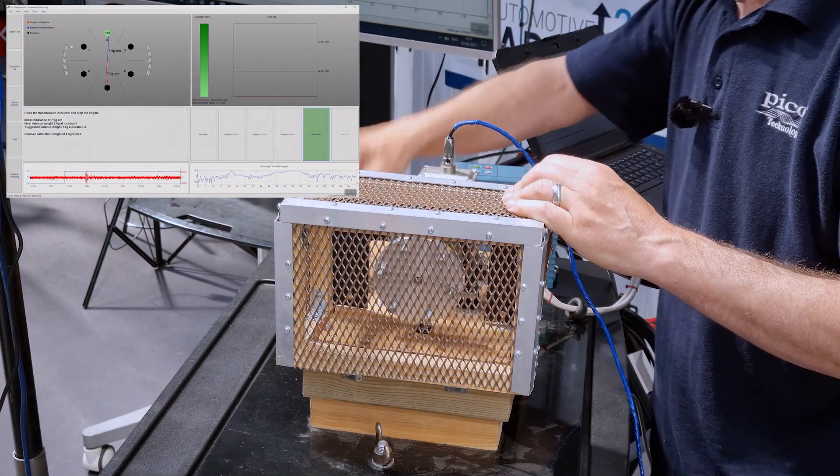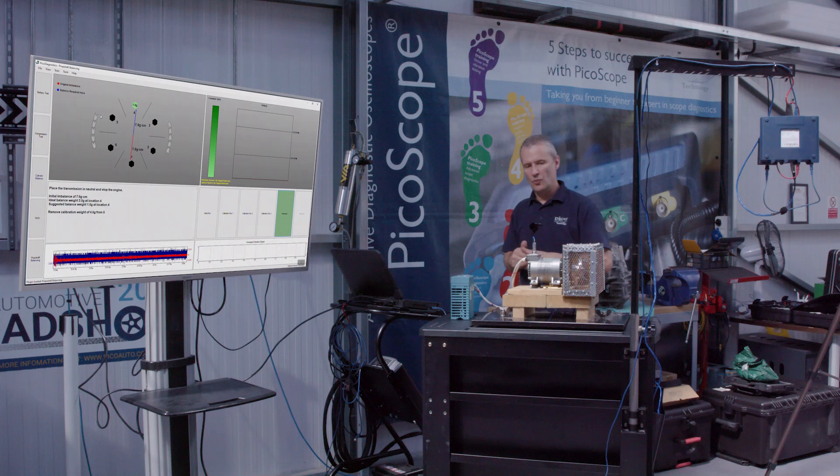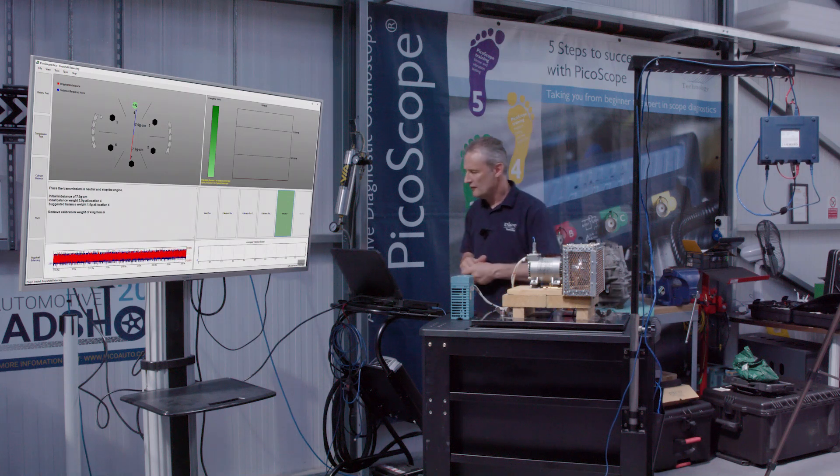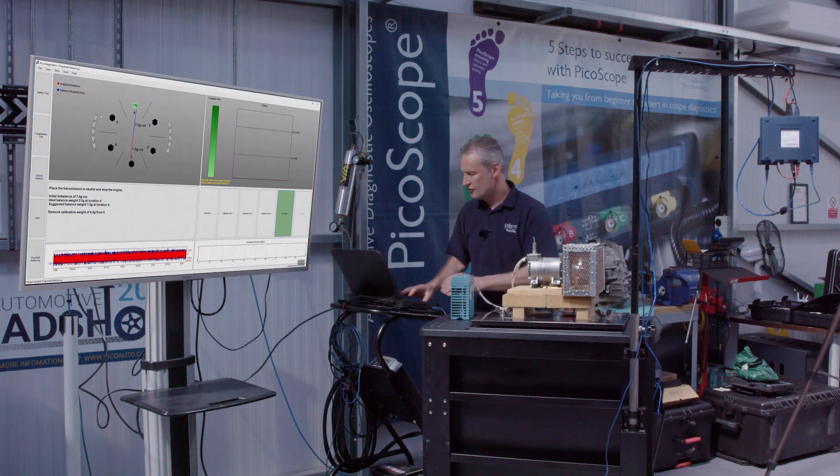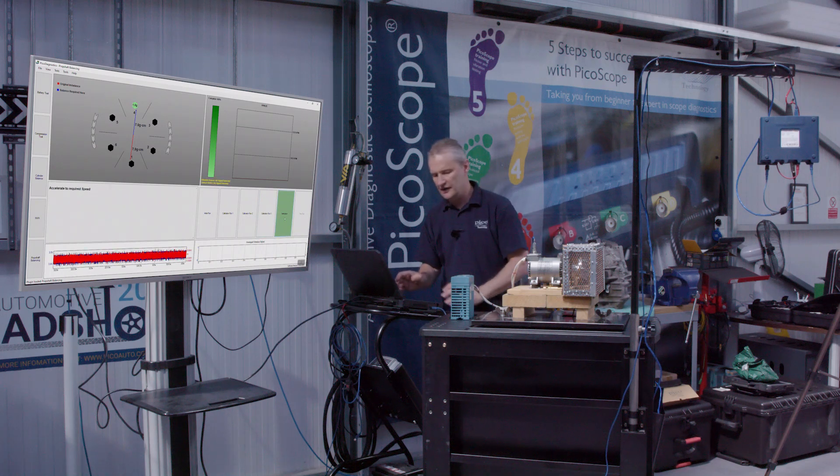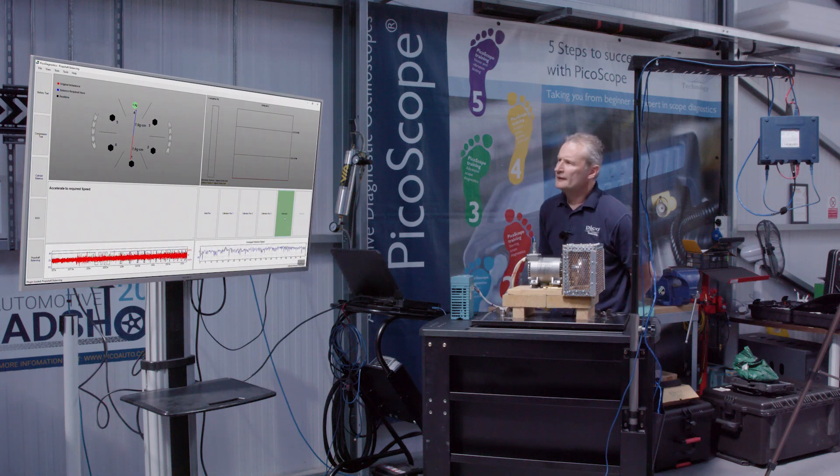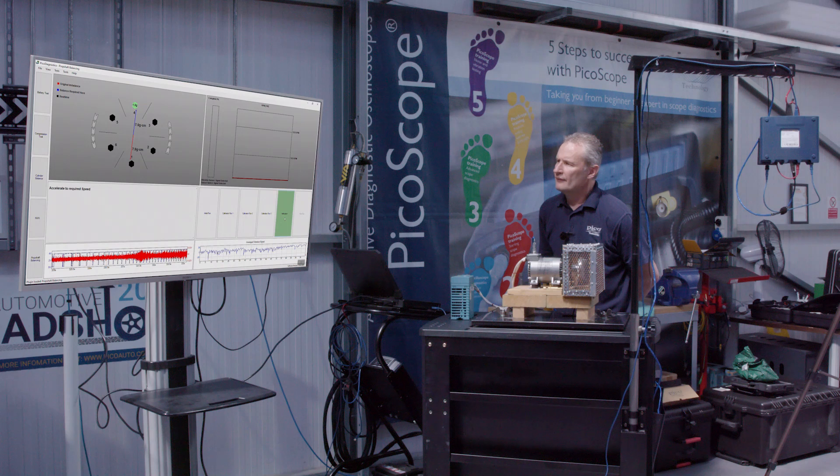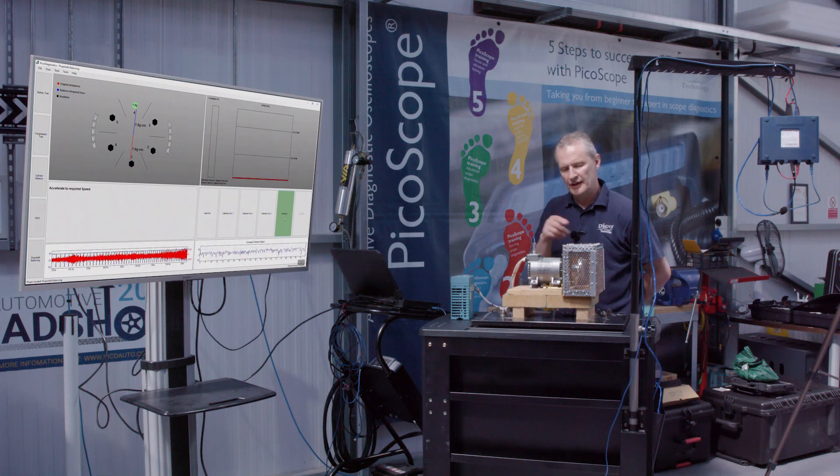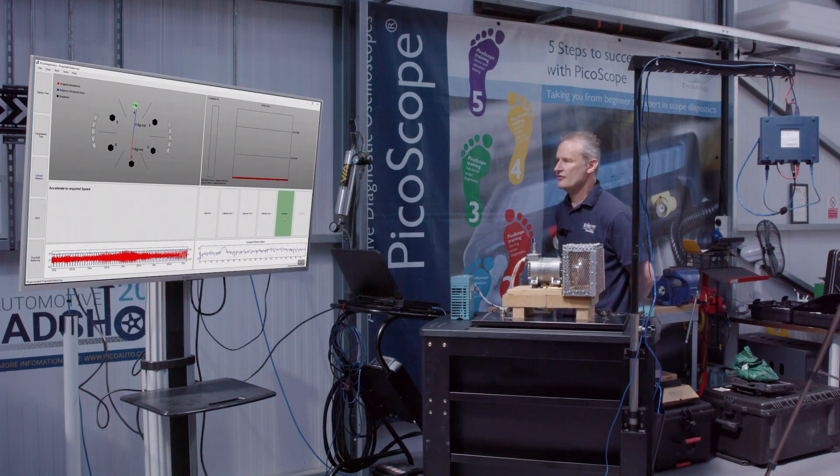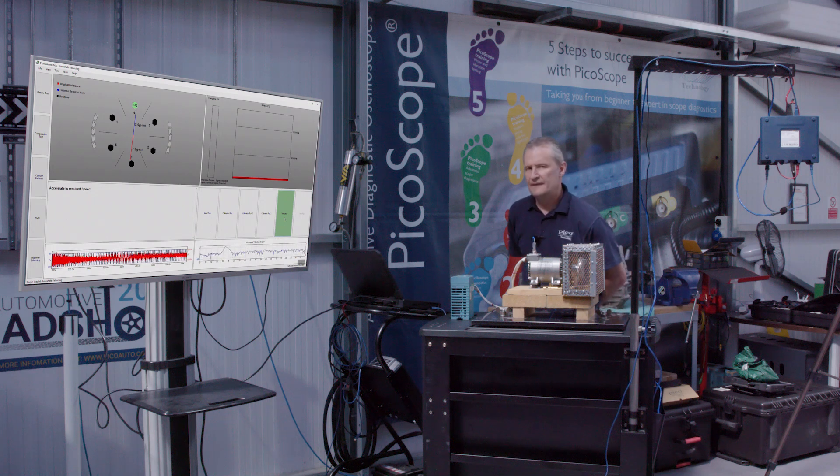There are numerous opportunities after this to fine tune the weight. So, try different weights. We call that the free run. But let's just do the verification run. Now, we've followed the instructions of the software. So, we'll click on verification and we'll run the shaft. Interesting to note the noise level now. During this trial because we should have sweetened that shaft out considerably from an imbalance point of view.